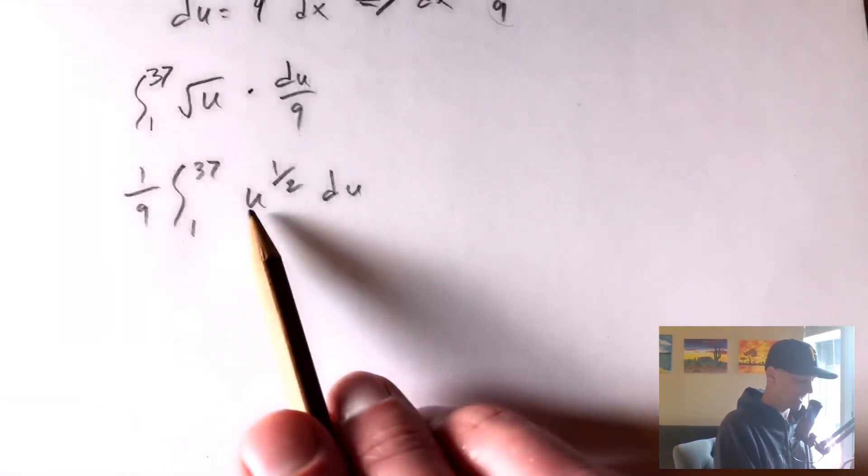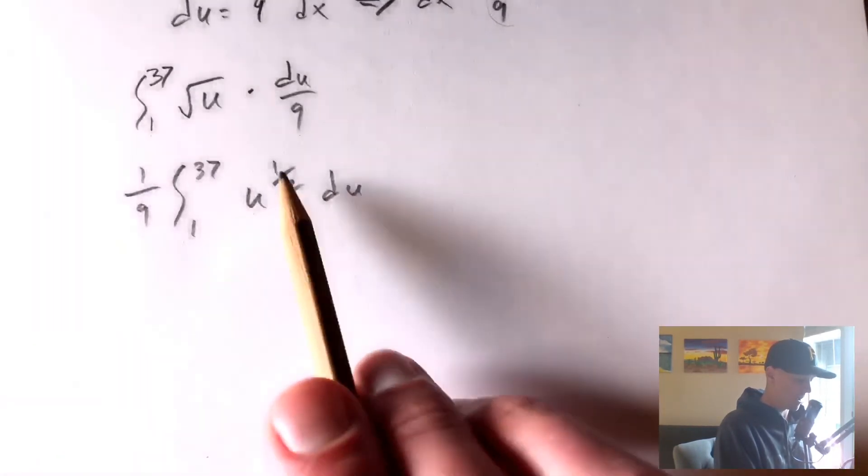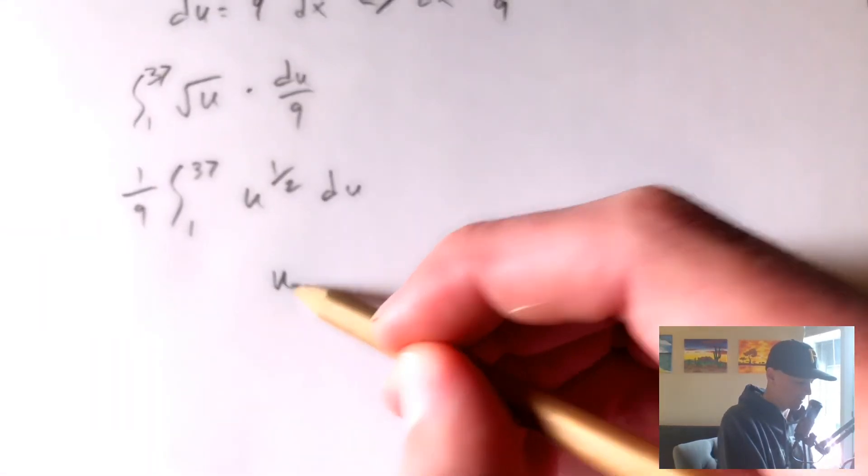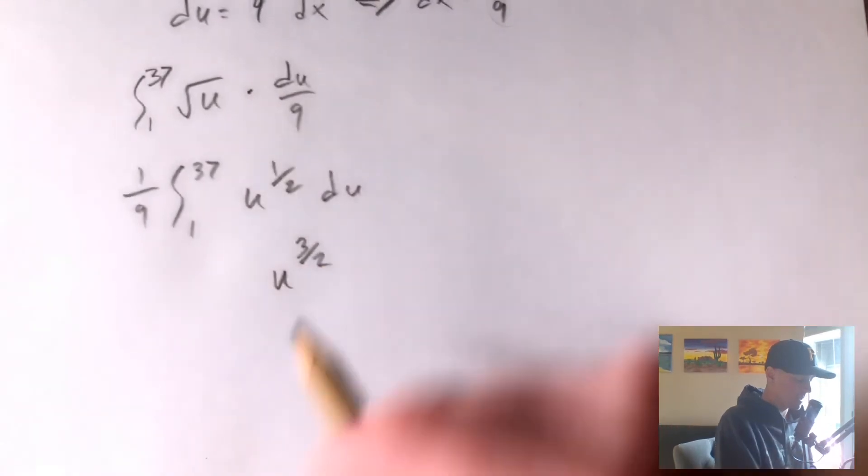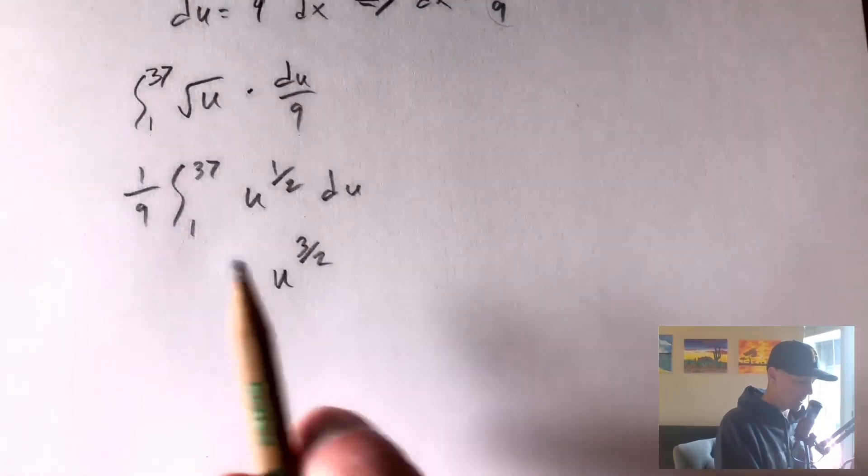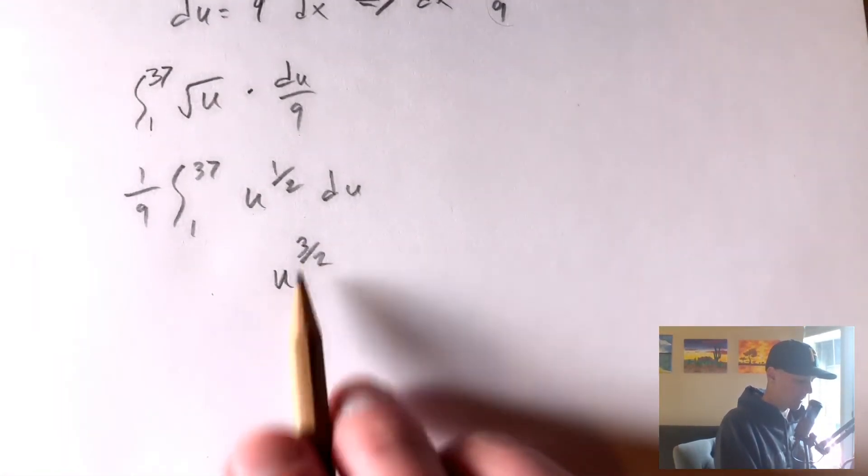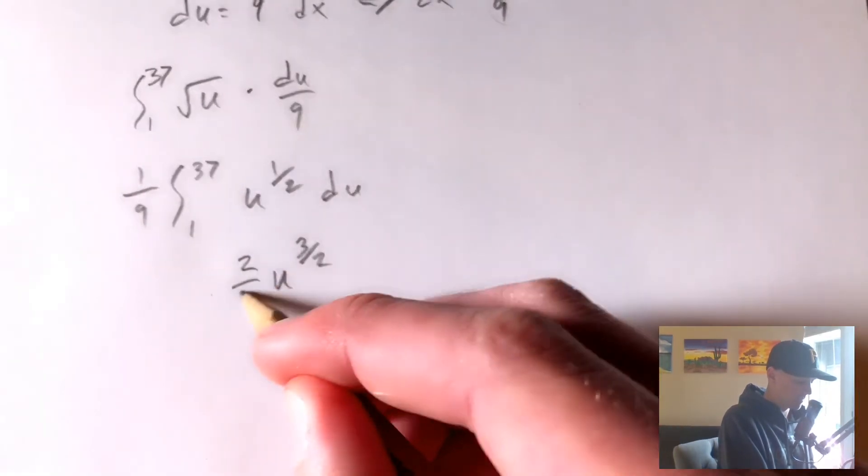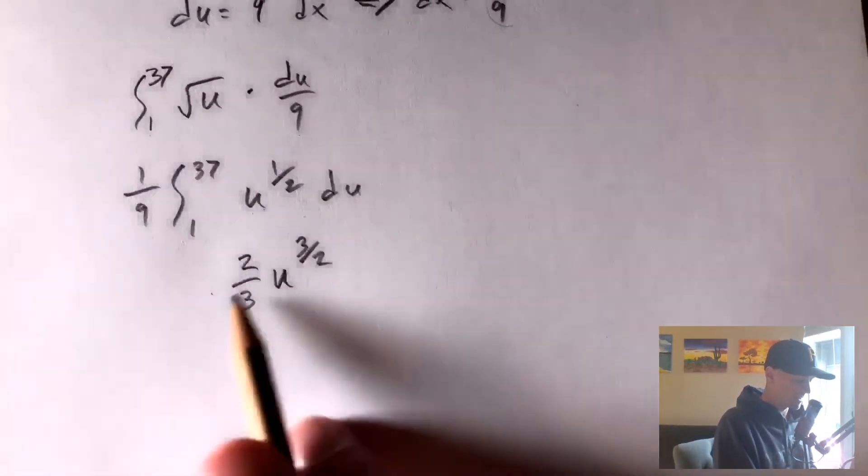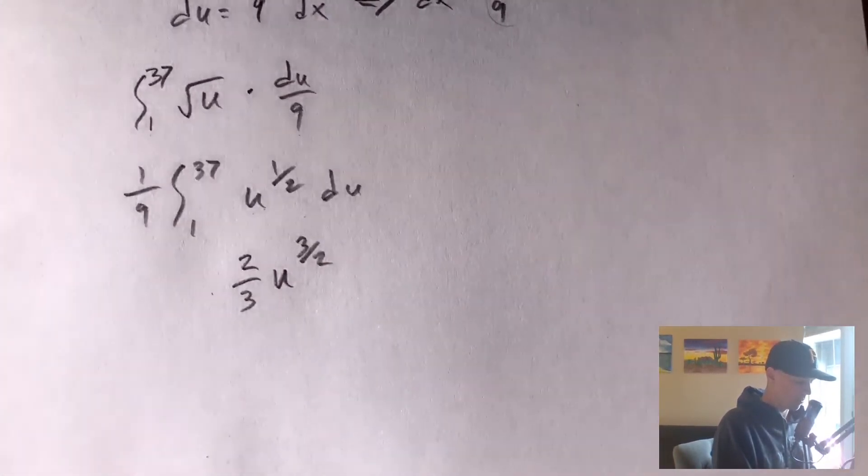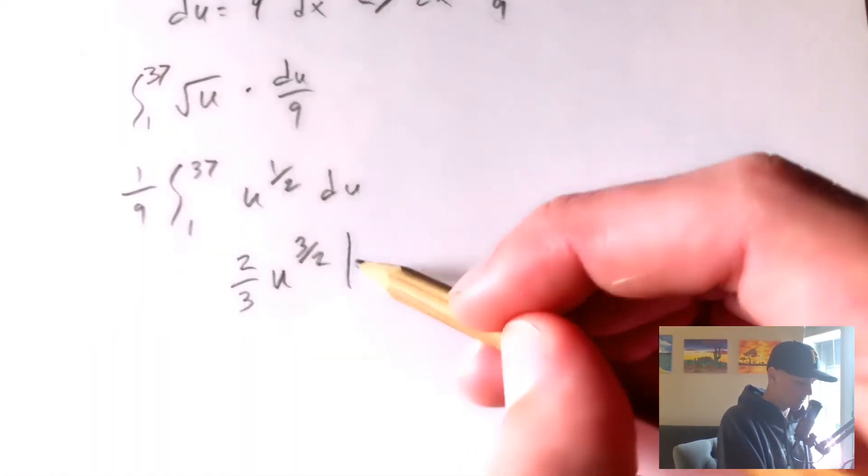So the power rule says that we're going to increase our power by 1. So 1 half plus 1 is going to be 3 halves. And then we're going to multiply this by the reciprocal of our new power, so 2 thirds. So this is the anti-derivative of u to the 1 half. And then we're going to evaluate this from 1 to 37.